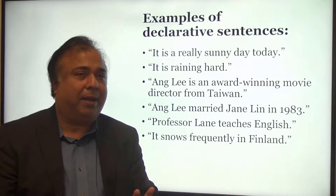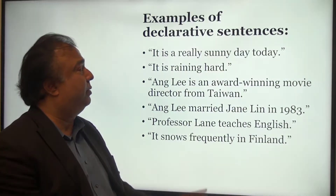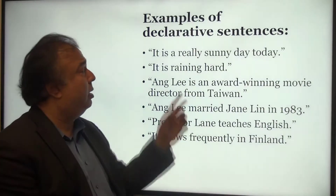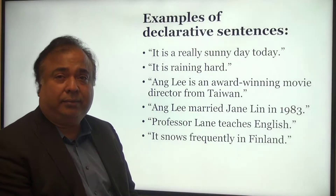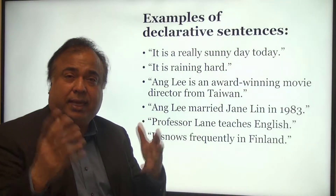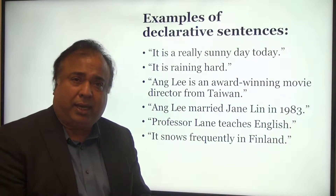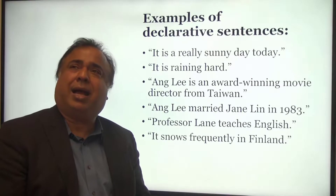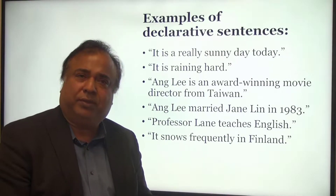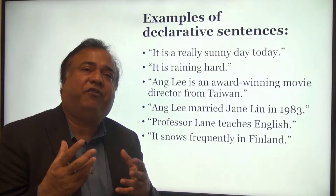Let's look at some examples of declarative sentences. It's a really sunny day today because the sun is out — it's bright, everything is lit up, people are like 'wow, beautiful sunny day.' That's a fact. It's a declaration of a fact.